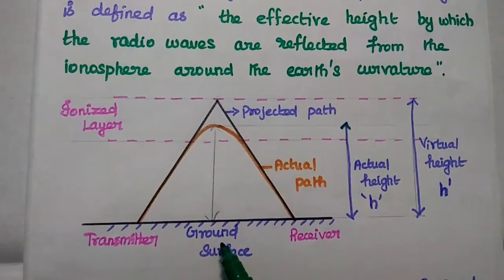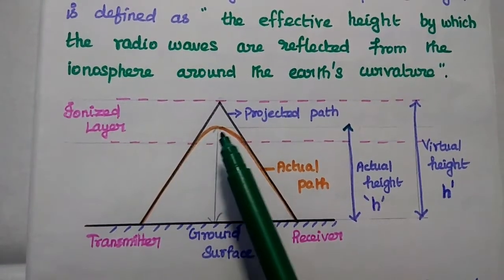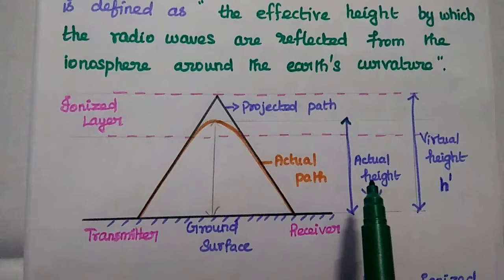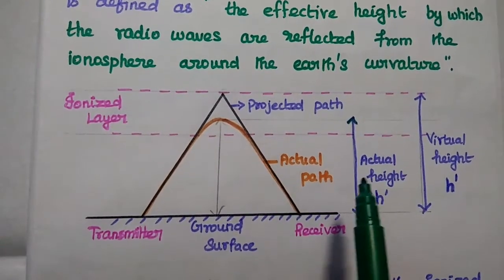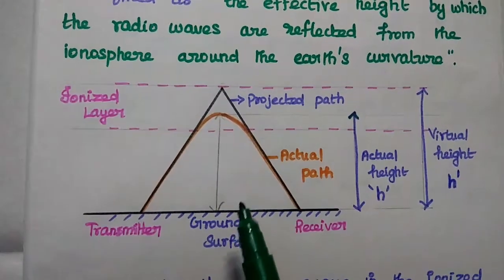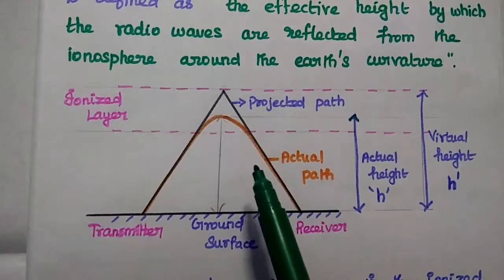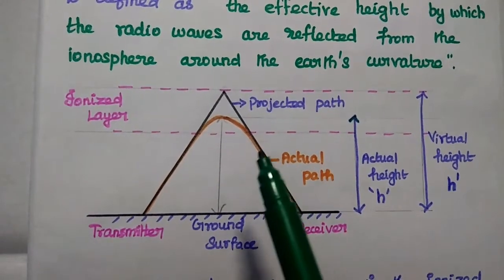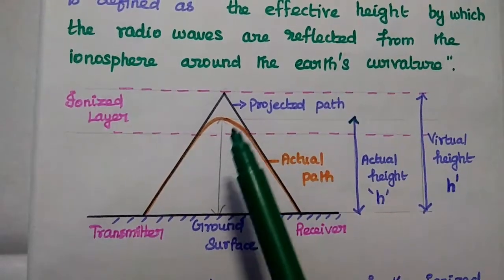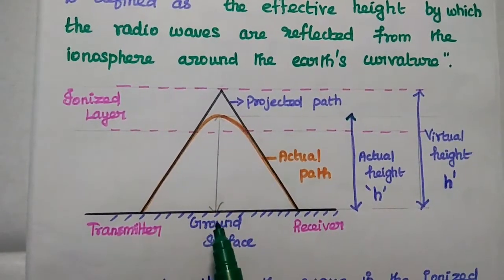The height between this ground surface and then the curved path is known as actual height. This is the actual one. But we want to get the reflection from this ionospheric layer. That can be achieved at a greater height from this ground surface.